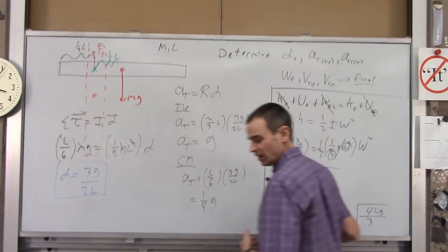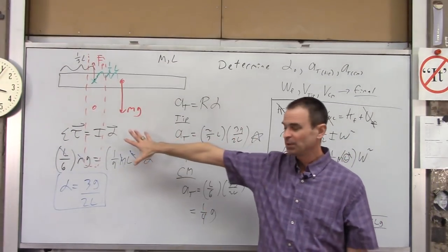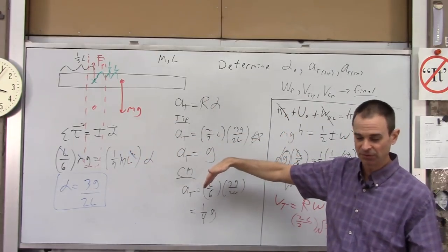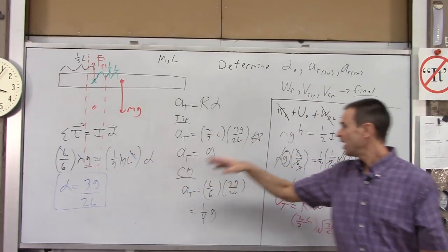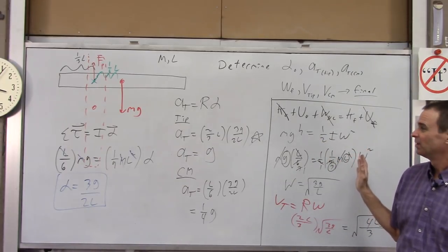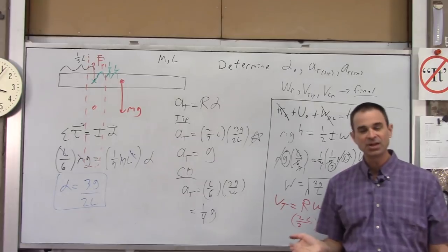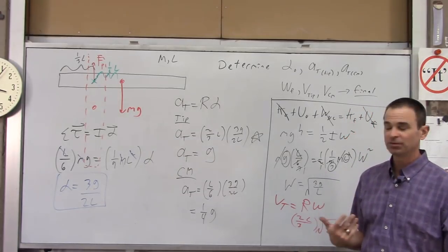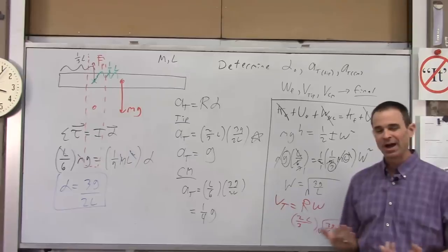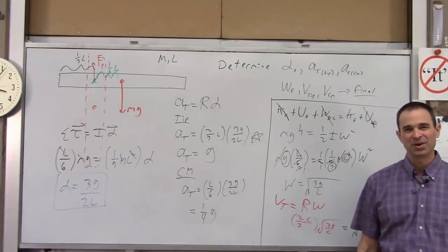So we did a couple of things here: we used net torque equals I alpha to find alpha and then some tangential accelerations, and then we used conservation of energy to find the angular and linear velocities of the meter stick at the bottom of its swing. I hope that was helpful — thank you very much.